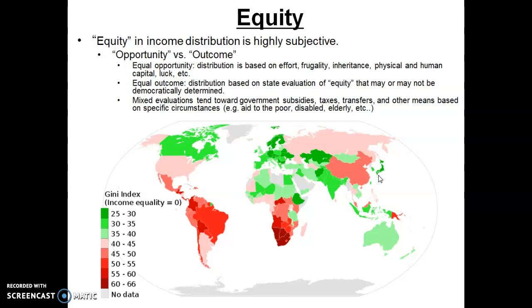Whether that diversity is good or bad is subjective and depends on who you talk to. Some people are proponents of the equal opportunity theory, which says that if a country gives people equal opportunity — meaning government does not stand in your way in achieving your potential — then whatever distribution results from that is fair and equitable. If you work harder, save more, or have natural talents that make you more valuable to others, you'll have a higher income.